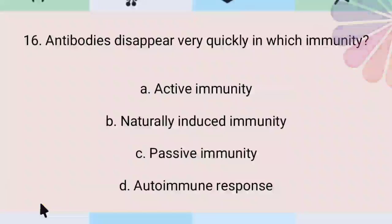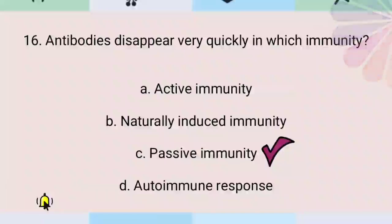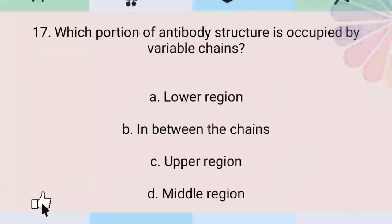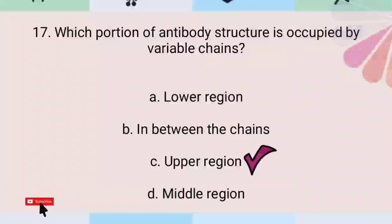Antibodies disappear very quickly in passive immunity. Which portion of the antibody structure is occupied by variable chains? The upper region.